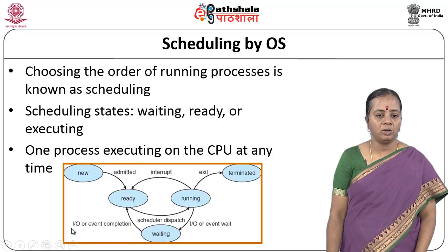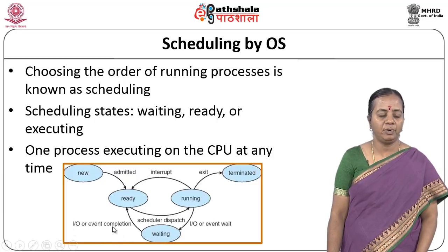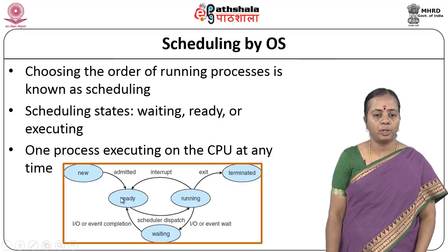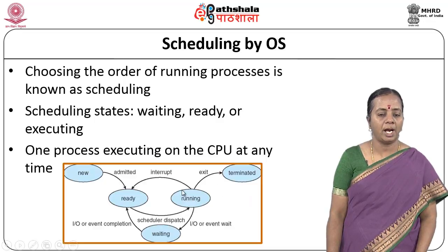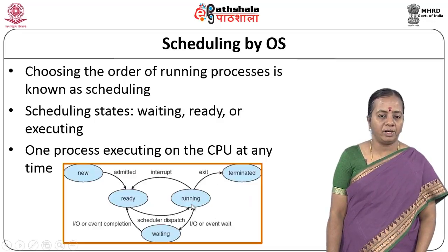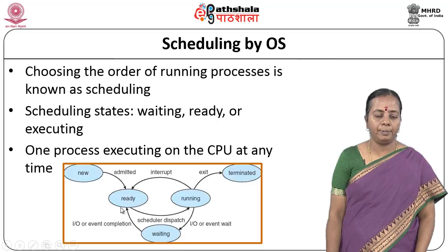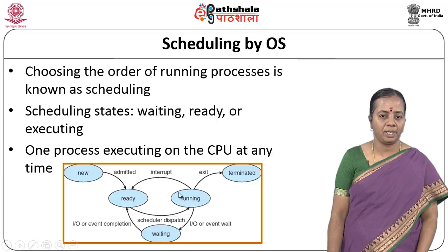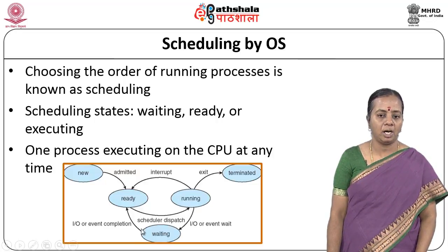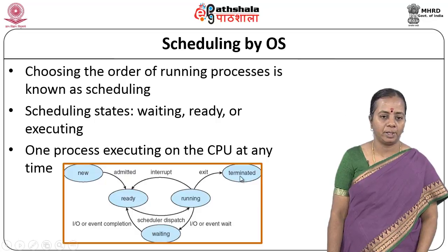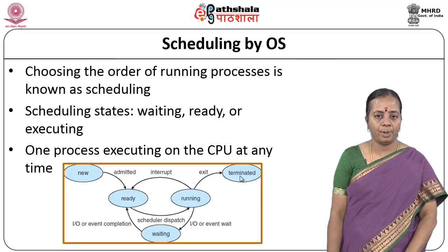A task may be put under a waiting state because some event has to happen first — the task cannot proceed until the event has occurred. By that time, the system puts the task under waiting state. If the I/O becomes available or the event is completed, then it is put back under ready state. Once the CPU is free, it is again scheduled and running. Sometimes when it is completely finished it will move to a finished state; sometimes it may be terminated due to an interrupt. Based on the situation, the RTOS decides whether the task has to wait, be executed, or be terminated — all decided by the scheduler.